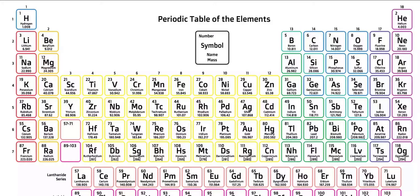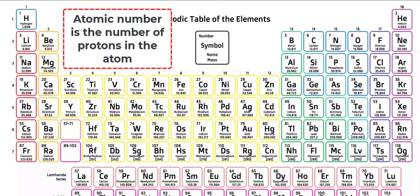Elements are defined by their atomic number, which is the number of protons in the nucleus, and that's a pretty important definition. Every atom of a given element will contain the same number of protons.